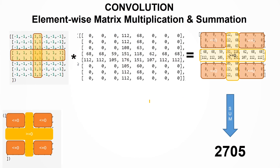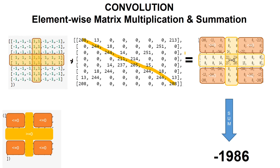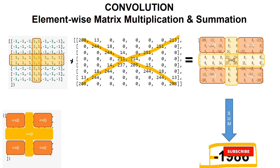Let me show another example. This is a cross shape in the image. When you multiply with our filter, the result ends up with a negative number. The negative number suggests that there are lots of other shapes outside the plus shape area in the given image, which is correct.